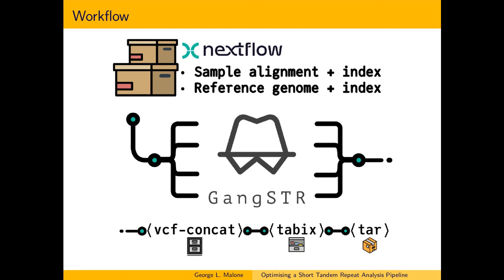Three main tools are used to achieve these aims: NextFlow, GangSTR, and Nimbus. NextFlow is a system for orchestrating complex, interdependent computational pipelines. GangSTR is currently the foremost toolkit for short tandem repeat analysis and is the main computational component. Nimbus is the cloud service offered by the Pawsey Supercomputing Research Centre, and the main environment in which the pipeline was tested and developed.